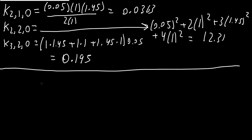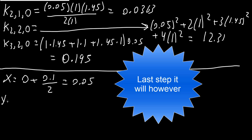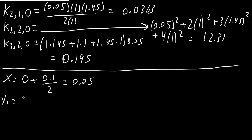Next we get x, y1, y2, y3 for the second time. x equals 0 plus 0.1 divided by 2, giving 0.05 — the value of x won't change. y1 equals the initial value 1, plus 0.1 times k2,1,0 which was 0.0363, divided by 2, giving 1.002.